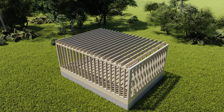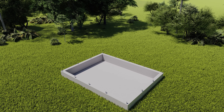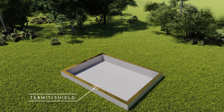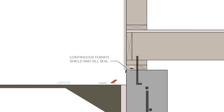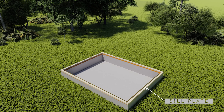Before we get into the roof framing let's quickly refresh on what's under the roof. First we have the footings, then the foundation walls, and then on top of the foundation wall we have the termite shield, which stops termites from coming up to the wood structure. Here's a professional demonstration on how a termite shield works. Then we have the sill plate which is fastened down to the foundation with the anchor bolts — those metal pins that you see going around the whole foundation.